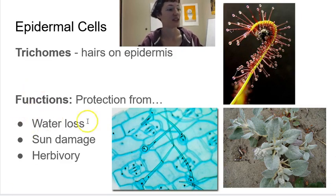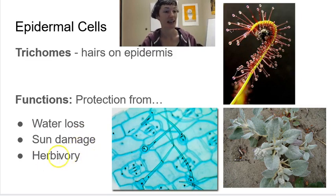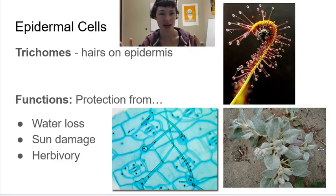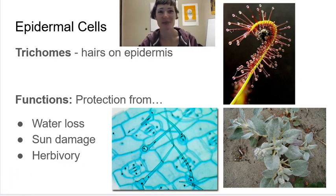Trichomes can function to help prevent water loss, sun damage, and herbivory. If you think about a leaf, it's like a juicy steak — but would you want to eat a juicy steak covered in hair? We'll pause here because we're about to move into another tissue system.